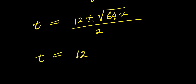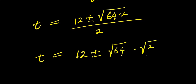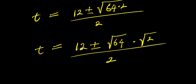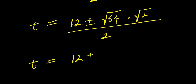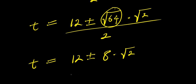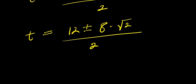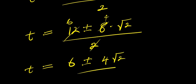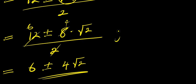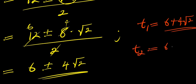We can express 128 as 64 times 2, so the square root gives 8 root 2, divided by 2. Simplifying, t equals 6 plus or minus 4 root 2. These are the two values for t.